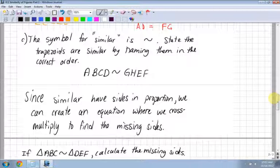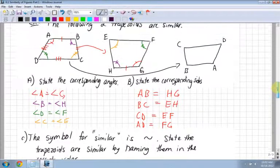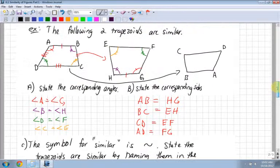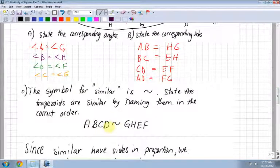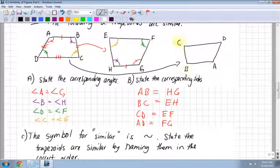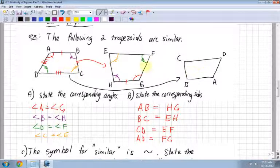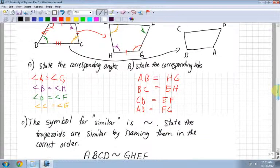The symbol for similar is this one, it looks like a little squiggle. State the trapezoids are similar by naming them in the correct order. Notice the ones above were A, B, C, D. So ABCD is similar to G, H, E, F. Notice how important that is when I've flipped it. It might be a good idea to flip these if they're not in the same orientation. Flip them so they are in the same orientation, because you have to label them in the correct order.